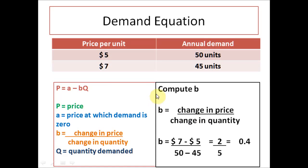First step is to calculate the B. We know that B can be calculated by taking change in price and dividing by the change in quantity. You take $7 increased price and you minus the original price which is 5. 7 minus 5 is 2.